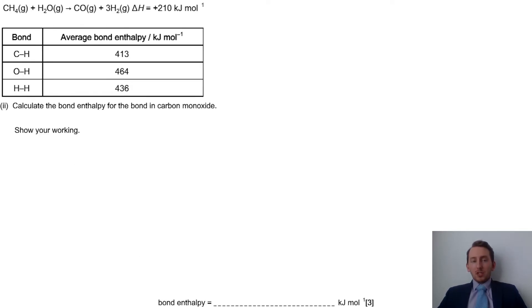Now, diving into the actual calculation itself, we have the equation at the top along with the overall enthalpy change. Now, the question has asked us for carbon monoxide's bond enthalpy. You can see that's been omitted from the information in the table, so we have to try and work that out.